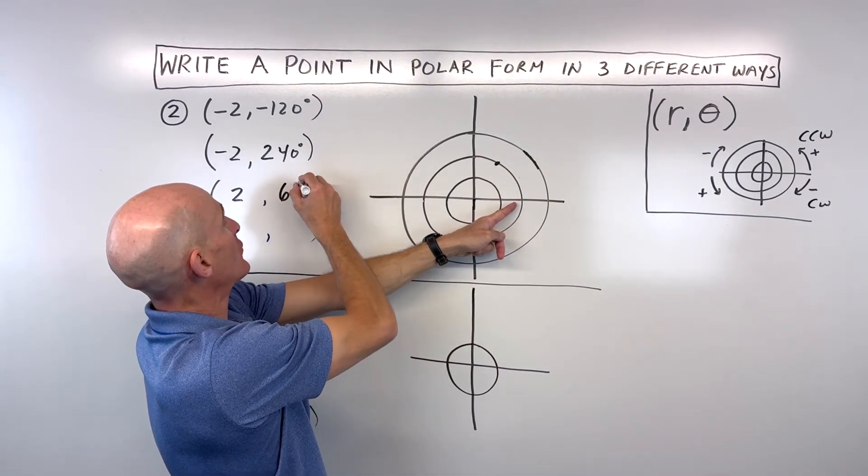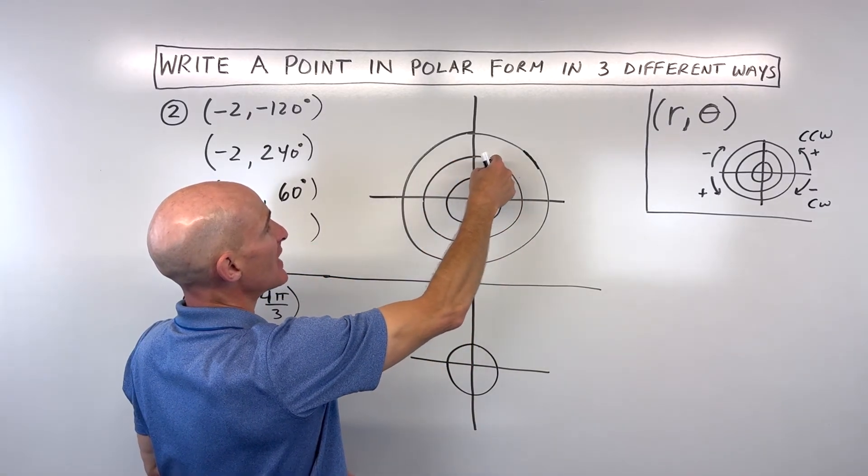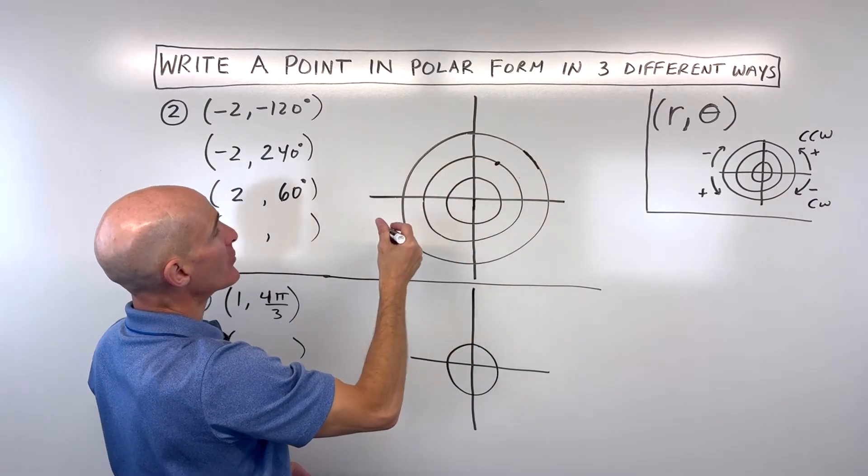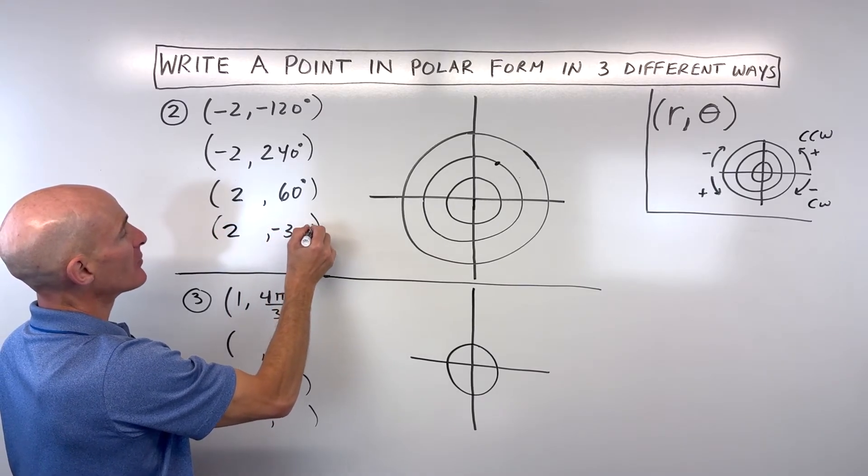Or I could go this direction, which is a negative angle because we're going clockwise, and that's going to be 300 degrees. So this would be 2 comma negative 300.